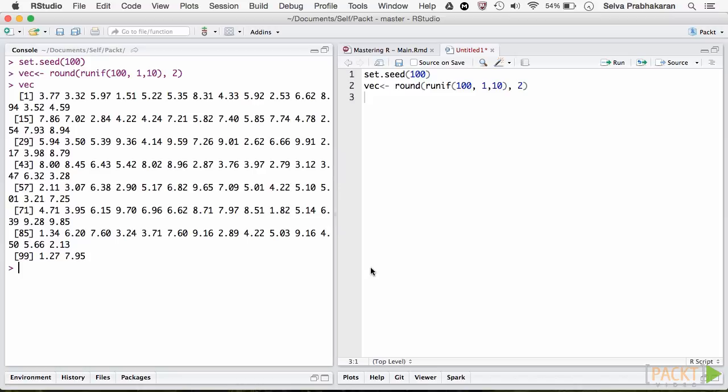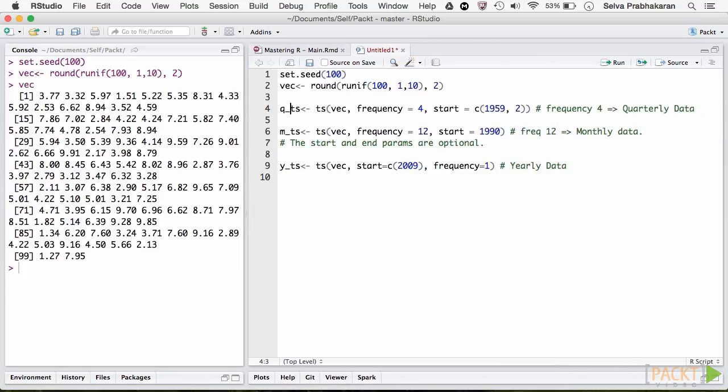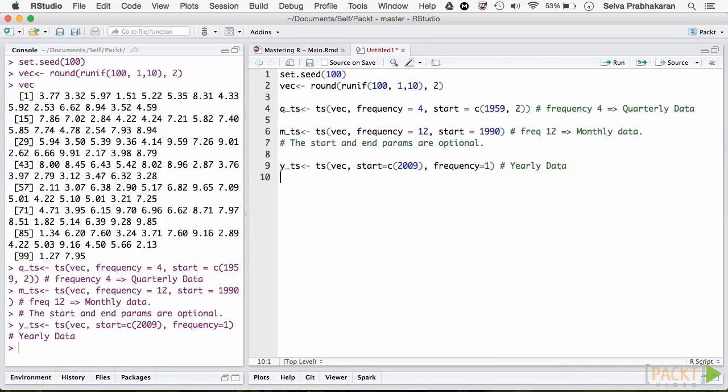R has its own way of dealing with time series objects. Let's see how to convert a numeric vector into a time series object. We use the TS function with various frequencies. The start option takes the year and month numbers.